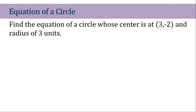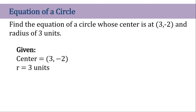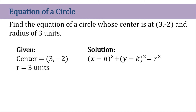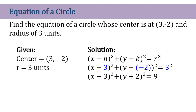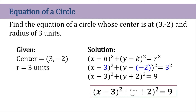Now let's try to answer a problem that involves this. Find the equation of the circle whose center is at (3, -2) and radius of 3 units. Let's write the given: center (3,-2) and radius of 3 units. Now let's write the circle equation formula, then substitute the center values for h and k. Since k is negative, it's ideal to put that inside the parentheses so you won't be confused on the sign. So r is 3. Simplifying: y minus negative 2 becomes y plus 2, and 3 squared is 9. So this is now our circle equation.